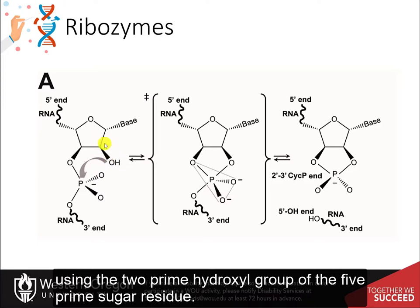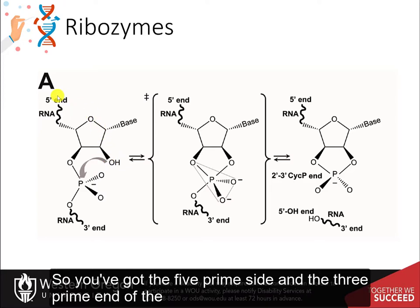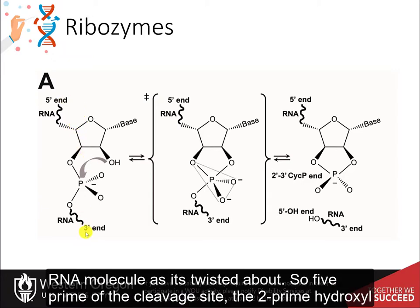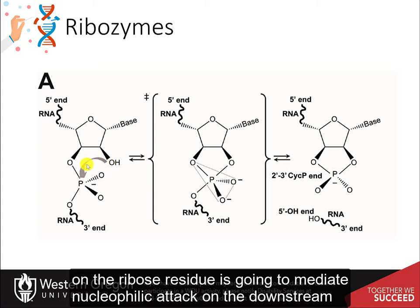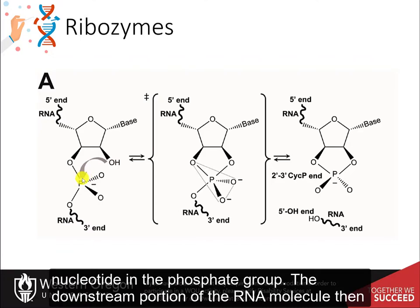The 2' hydroxyl group of the 5' sugar residue mediates the reaction. You've got the 5' side and the 3' end of the RNA molecule as it's twisted about. So 5' of the cleavage site, the 2' hydroxyl on this ribose residue is going to mediate nucleophilic attack on the downstream nucleotide in the phosphate group.